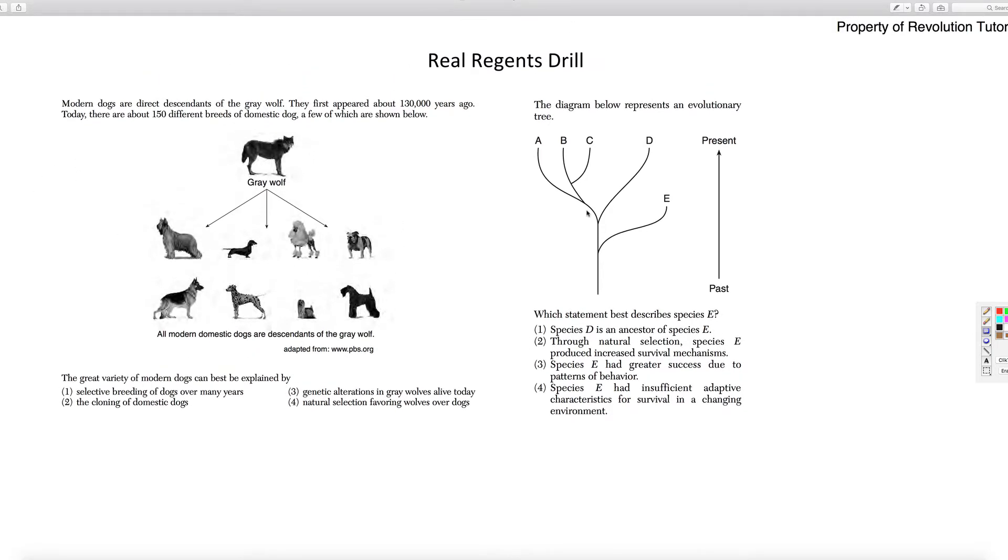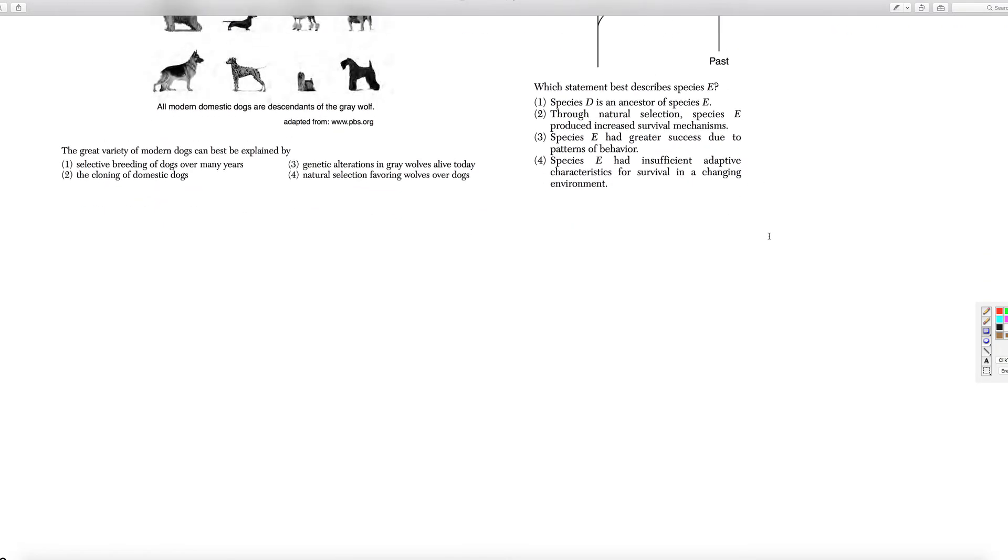It should be in selective breeding more than... yeah. Next one. The diagram below represents an evolutionary family tree, which describes E. It didn't evolve. It didn't survive until present. So it's extinct.